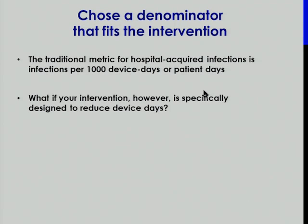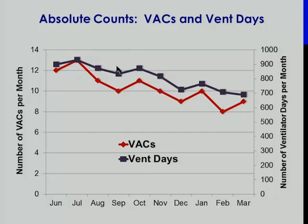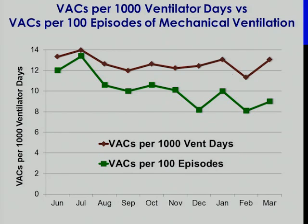A fine point for the epidemiologists: you have to choose the denominator that fits the intervention. The traditional metric for hospital-acquired infections is events per 1,000 device days or patient days. But if your intervention is directed toward decreasing the number of ventilator days — shrinking the denominator — you might paradoxically see no change in rates even if you're improving. For example, if VAC counts and ventilator days are both going down, calculating VACs per 1,000 vent days gives a flat line. But calculating VACs per 100 episodes still shows the improving trend. Use a denominator that reveals the progress you're actually achieving.